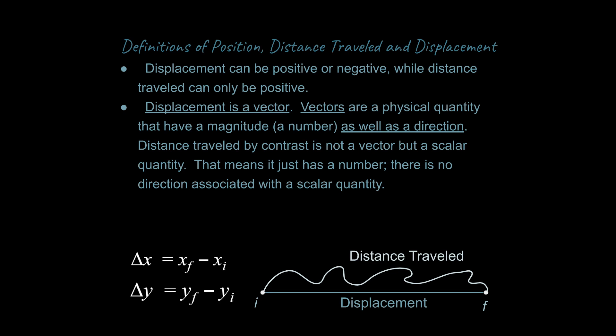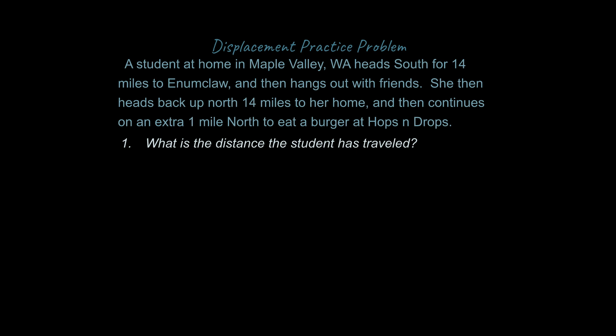Let's try one last problem. A student at home in Maple Valley, Washington heads south 14 miles to Enumclaw, hangs out with friends, then heads back north 14 miles to her home, and continues one more mile north to eat at Hops and Drops. For physics problems, you want to make a diagram. We call 0 her home, negative 14 miles is Enumclaw, and positive 1 mile is Hops and Drops. That helps us understand what's happening in the problem.